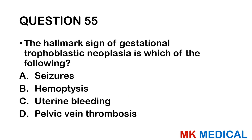Question fifty-five: The hallmark sign of gestational trophoblastic neoplasia is which of the following? A, seizures; B, hemoptysis; C, uterine bleeding; D, pelvic thrombosis. The hallmark of gestational trophoblastic neoplasia is uterine bleeding, which is C.